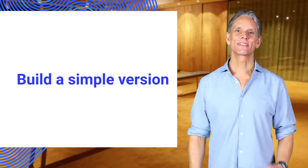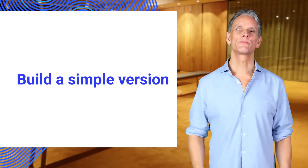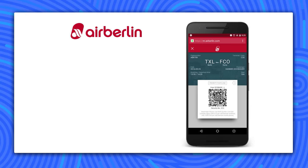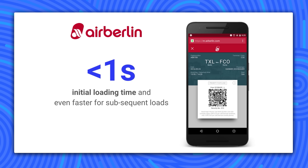Comparing data usage to their native app, initial load took up to 92% less data, and data usage to first transaction was 82% less. Not everyone can take the Konga approach — starting from scratch is often not realistic. Another approach is to build a simple version of a site, improving a specific section or user journey. For Air Berlin, it wasn't possible to do a site-wide PWA, so they focused on the post-booking experience, delivering a fast, engaging, reliable experience. Their users at the airport need quick access to itinerary details, boarding pass, and destination information. They leveraged caching to solve this, achieving load times of under a second.